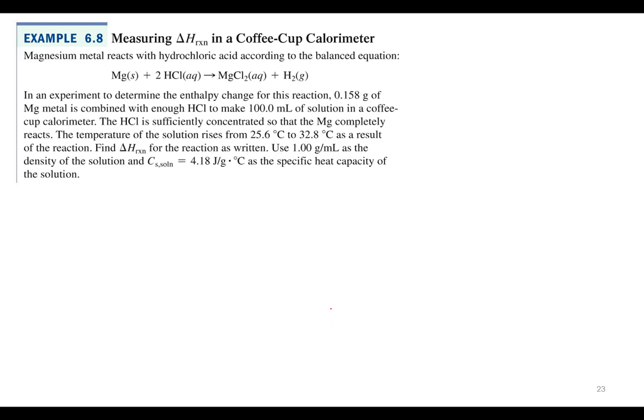So, this is a reaction between magnesium and hydrochloric acid that reacts according to that balanced equation. So the experiment, we want to determine the enthalpy change, which is delta H, when 0.158 grams of magnesium metal is combined with enough HCl to make a 100 milliliter solution in a coffee cup calorimeter. The HCl is sufficiently concentrated, so the magnesium completely reacts. Well, before we keep going, I think Tro's trying to give us something. He's trying to tell us something.